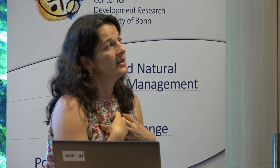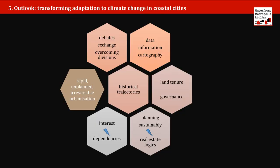As input for our debate, I thought about what can be drawn from this presentation. First, people need to be aware when doing transformative adaptation planning that there are many divisions — language divisions in the debate, disciplinary divisions — and bringing people together is very important. Planners always assume that data, information, and cartography are available, but that's absolutely not the case in these contexts. Trajectories and tenure governance must be considered. In the global south there are also many dependencies on foreign investors and foreign donors. And there's of course the vision of planning sustainably, which is absolutely contrary to the logic of the real estate market — and this has not been considered enough, because the people who have money are not the public authorities but the real estate companies.